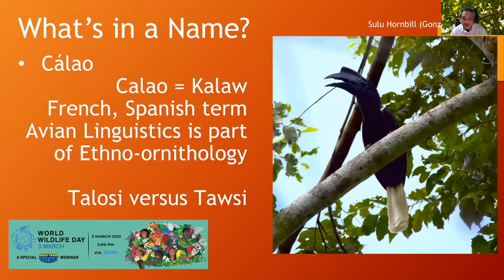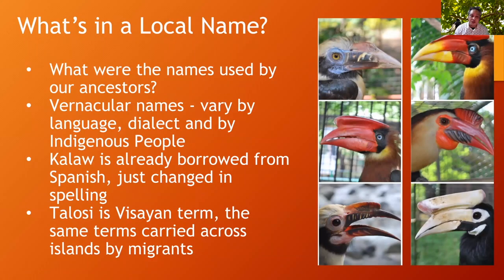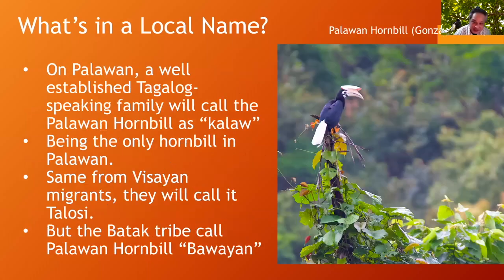Here's a picture of the Sulu hornbill. Most people who are Dayo to Tawi-Tawi will call it Talusi because they may be Cebuano. But the original inhabitants call it Talusi because of the black coloring — a name they acquired. The local name has changed. That's why it's good to have scientific names — they keep us together, providing a standard because all the other names change. We don't even know the names used by our ancestors because through colonization we adopted those names. Kalaw is not the original name — it's an acquired name.